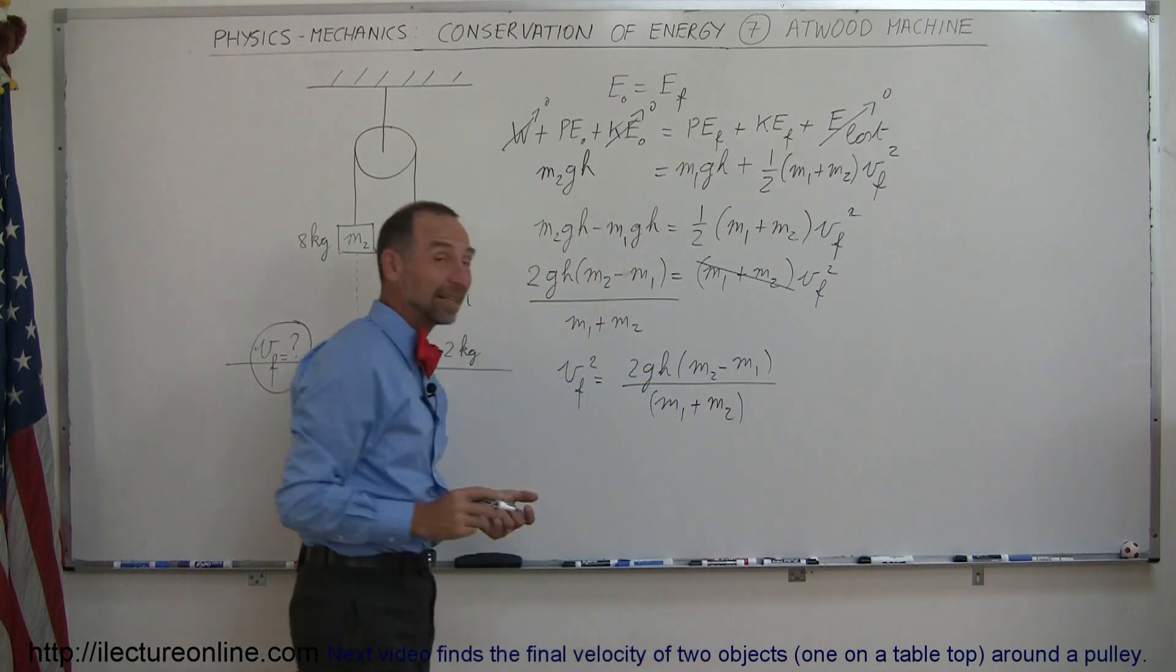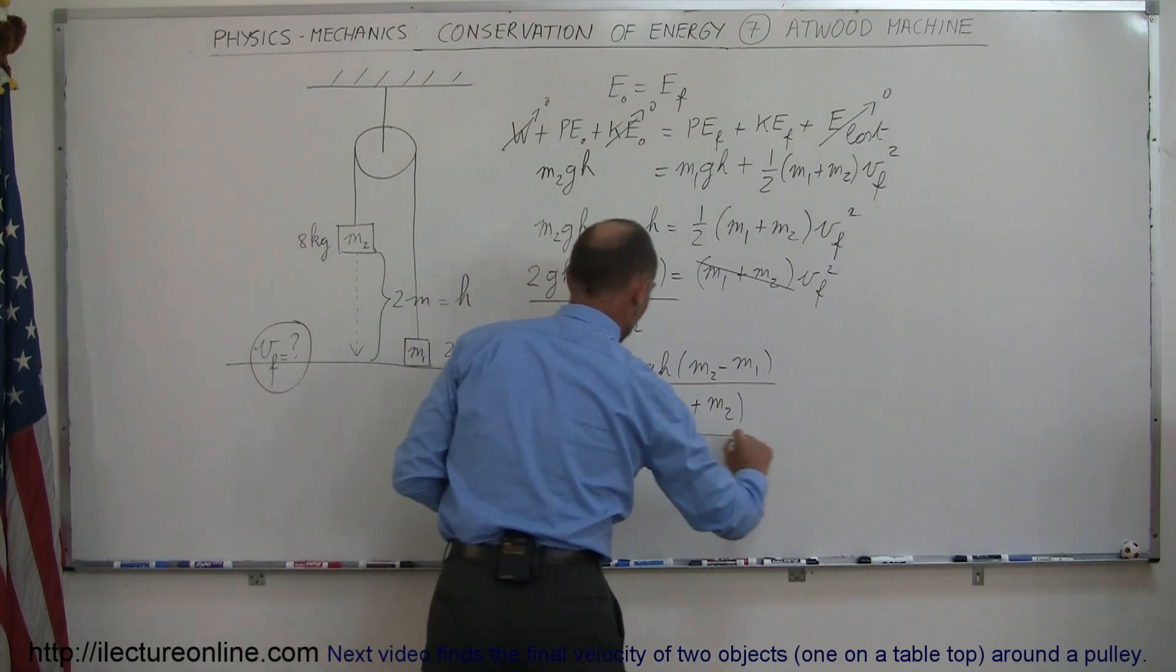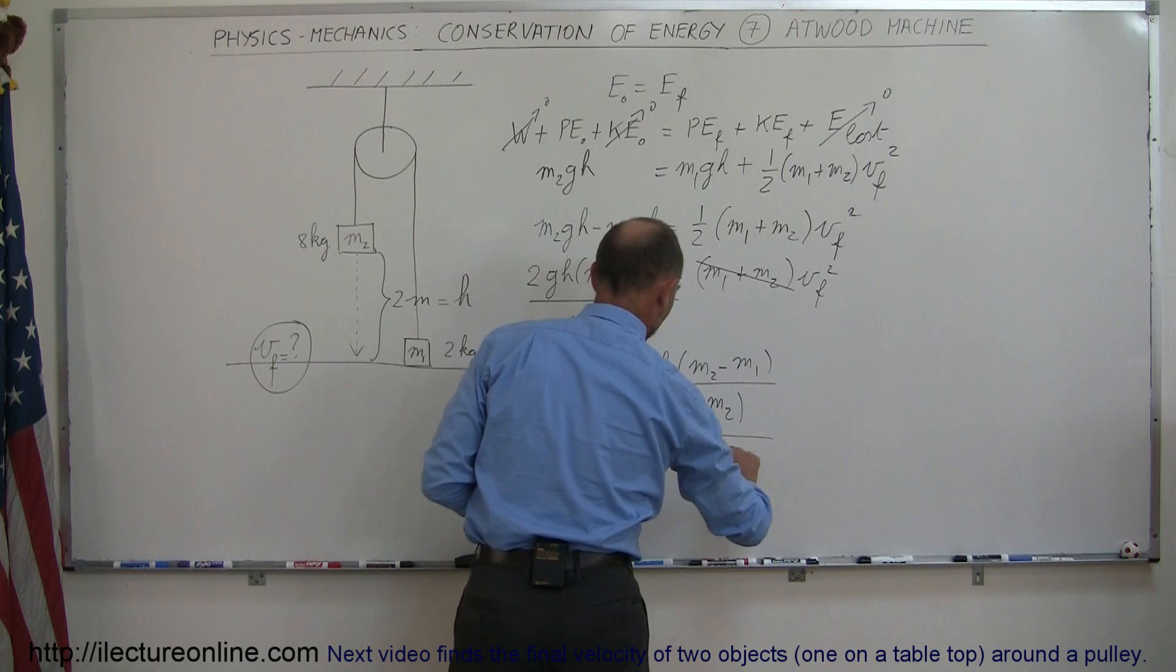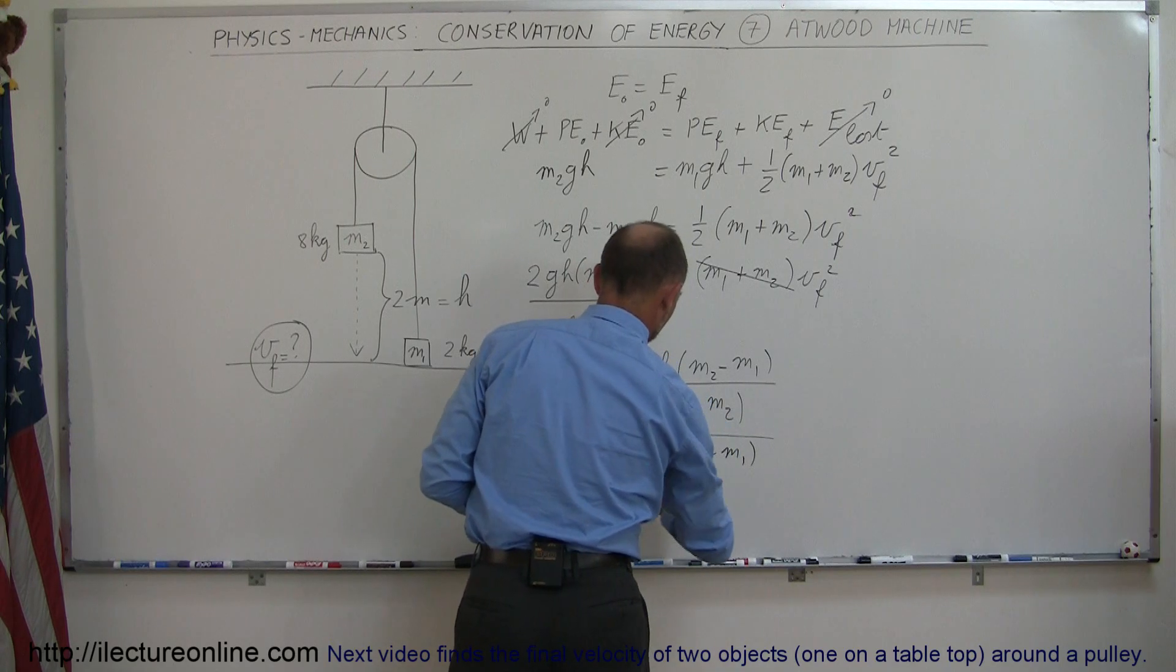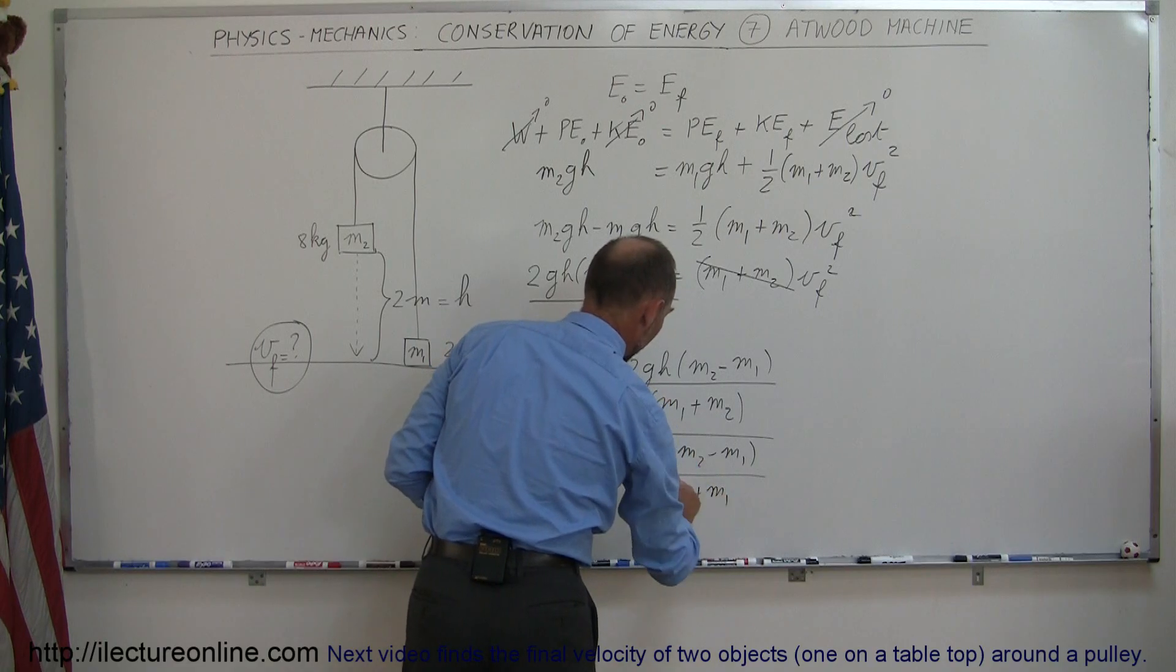And then finally we need to take the square root of both sides, which means that V final will be equal to the square root of 2GH times M2 minus M1 divided by M2 plus M1. So reversing the M1, M2 right there, that's a 2.